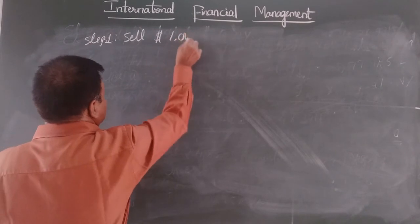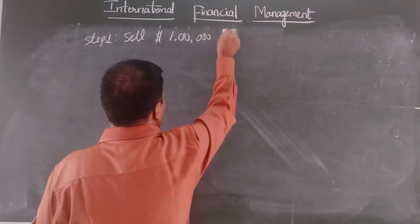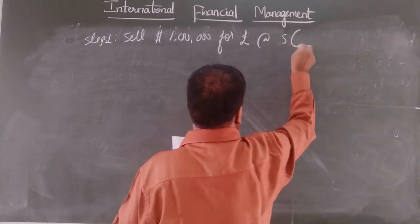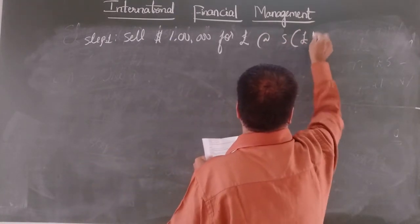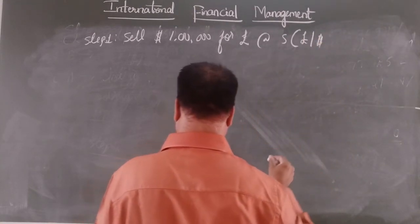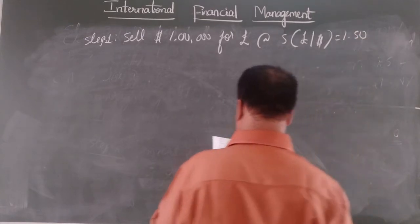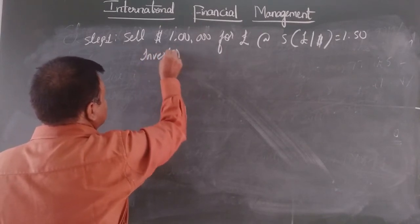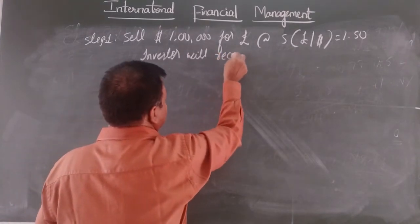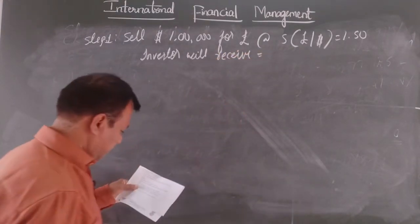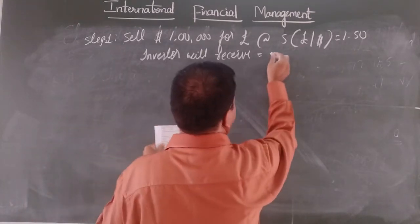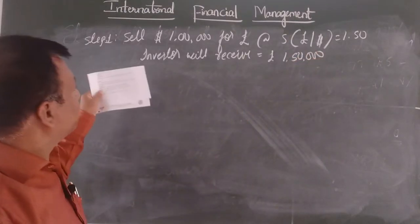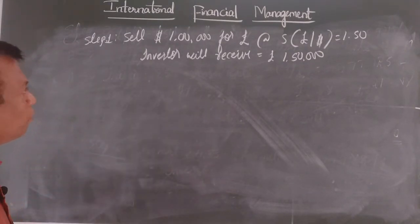Sell dollar 1 lakh for pound at spot rate of pound by dollar is equal to 1.50. Since, investor will receive how much? 1 lakh 50,000 pounds. So first what we are doing? We are going to sell the dollar for pound and we got a pound as 1 lakh 50,000.